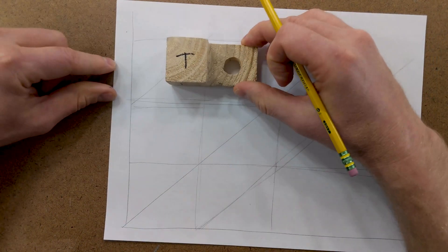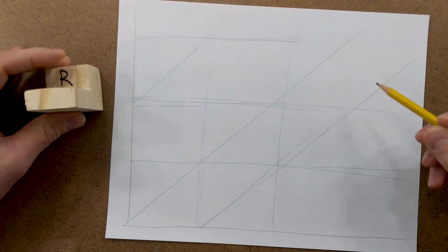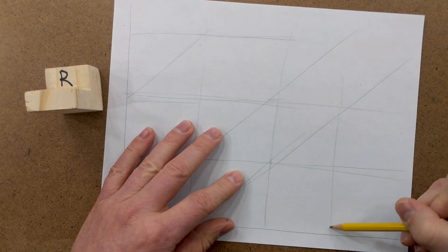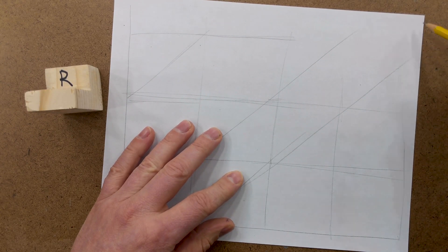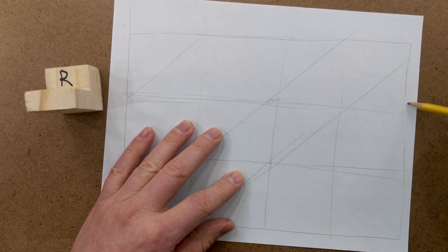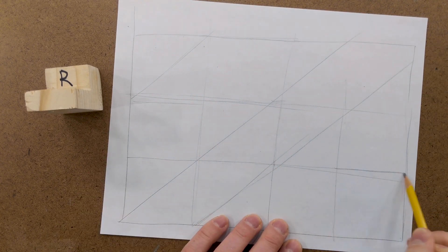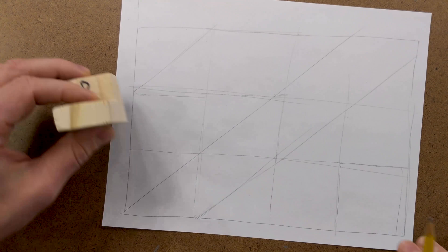So now we have our top section, and then we can just go ahead and project these lines down. And we have our right section.